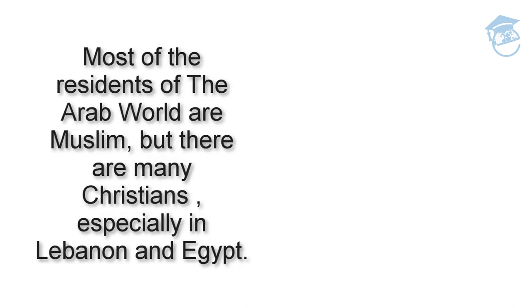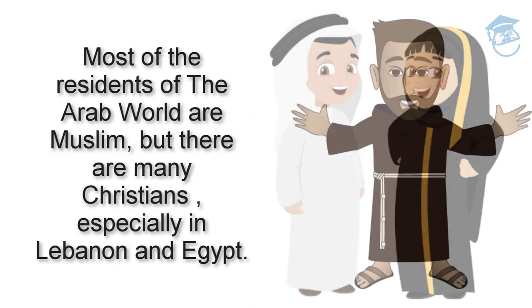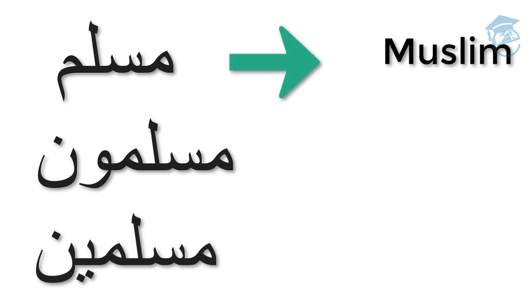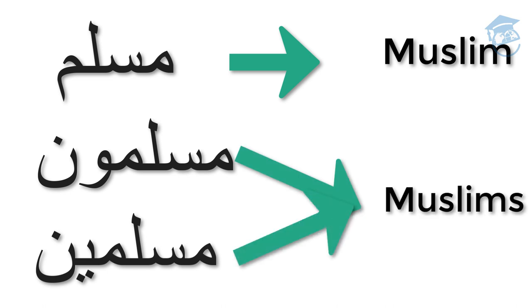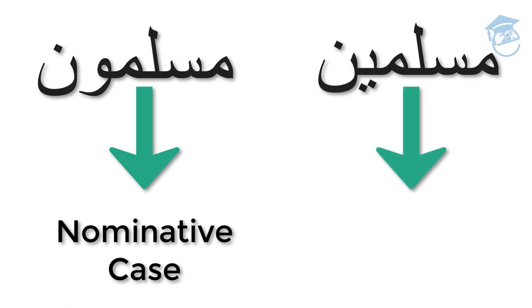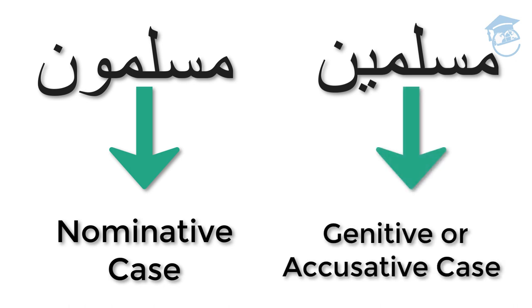Most of the inhabitants of the Arab world are Muslim. Muslim — Muslimun or Muslimin — means Muslim or Muslims in plural. Muslimun is used in the nominative case; Muslimin is used in the genitive or accusative case. Masihi — Masihiun or Masihiin — means Christian or Christians.